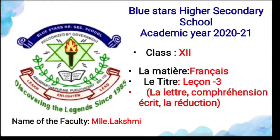The second content is the pronom démonstratif — the demonstrative pronoun. These pronouns replace a specific noun that was mentioned previously. The forms are celui, celle, ceux, and celles, meaning 'this one,' 'that one,' or 'these/those.' Celui is masculine singular, celle is feminine singular, ceux is masculine plural, and celles is feminine plural.